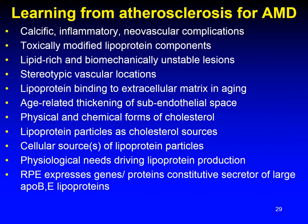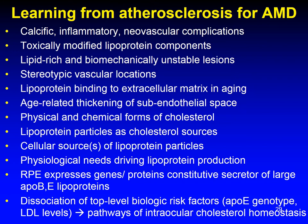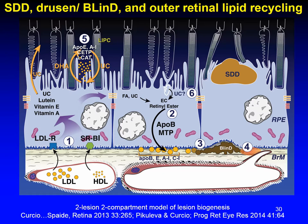We found that the RPE expresses genes and proteins indicating it is a constitutive secretor of large ApoB and E lipoproteins. This intraocular lipoprotein production can explain the dissociation of top-level biological risk factors for AMD and cardiovascular disease, such as the ApoE genotype and LDL levels, because there are pathways of intraocular cholesterol homeostasis in the eye. In 2009, we proposed that soft drusen form as a downstream consequence of dietary delivery of lipids to retina and the recycling of unneeded lipids by RPE to the choriocapillaris. In 2013, we proposed that subretinal drusenoid deposits are plausibly part of the same system of outer retinal lipid recycling.